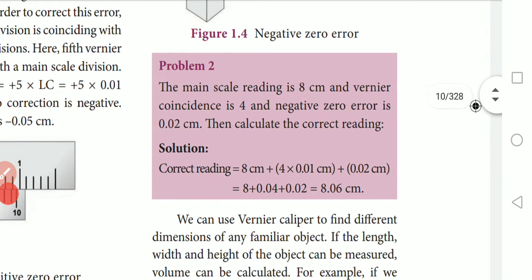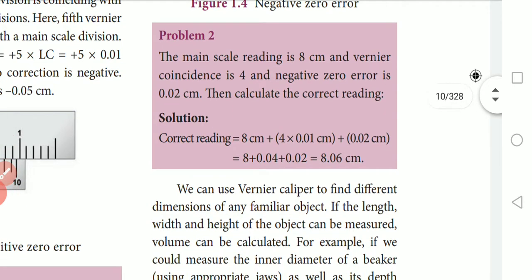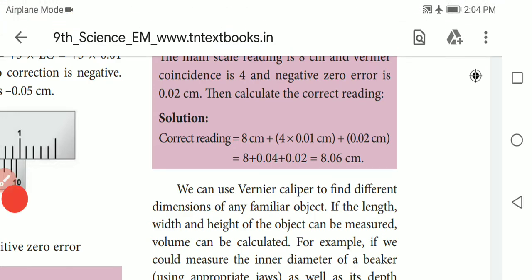Let's solve one problem. The main scale reading is 8 cm, the vernier scale reading is 4, and there is a negative zero error of 0.02 cm. The correct reading equals 8 cm plus 4 into 0.01 cm plus correction 0.02 cm, which gives 8.06 cm.